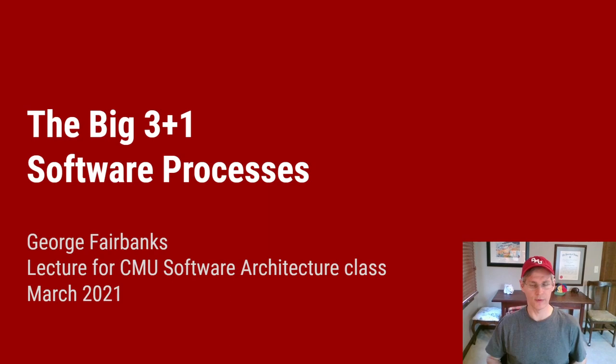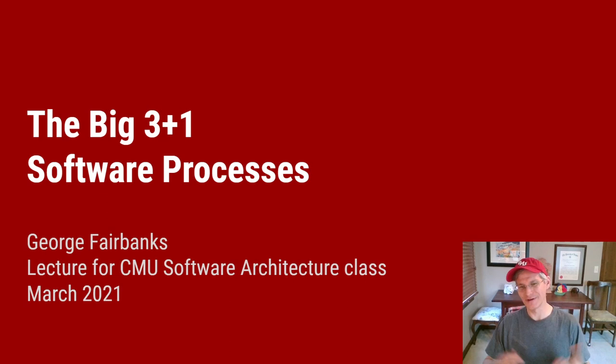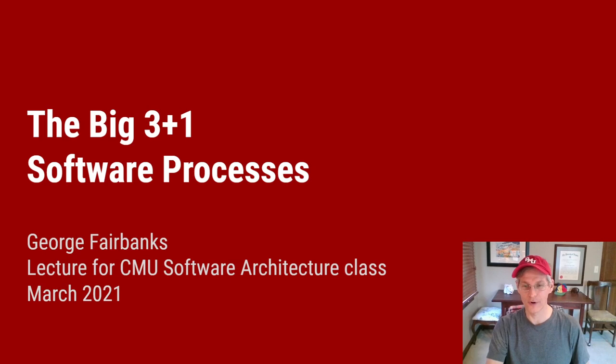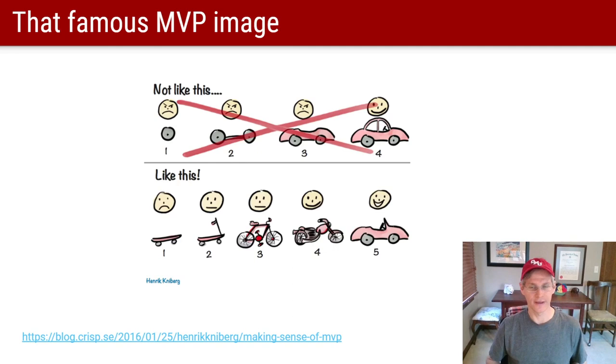Hi, this is George Fairbanks. This is a talk about the three primary software development processes: waterfall, incremental, and iterative — plus one more, which is what actually happens in practice. I called this the three plus one software process models because, as it happens, tomorrow I'm hosting Philippe Crucian who wrote the four plus one architecture views — so that's a little bit of fun in reference for those of you who are software lovers.